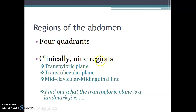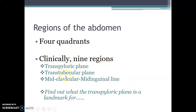To get the nine regions, you draw a transpyloric plane through the pylorus of the stomach, then a transtubercular plane through the iliac tubercles. Vertical lines run from the mid-clavicular to the mid-inguinal point on both right and left sides. An assignment is to list at least 10 structures that pass through the transpyloric plane.